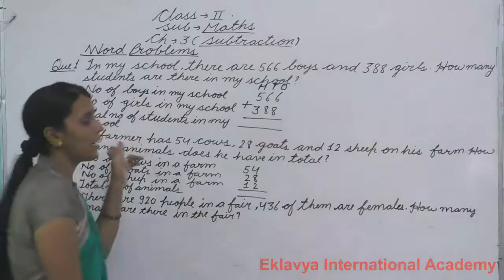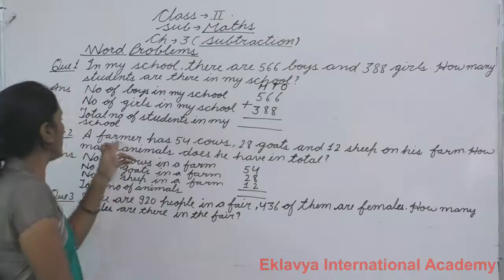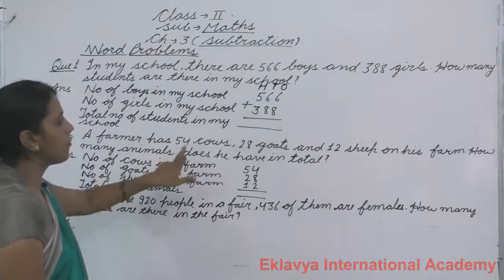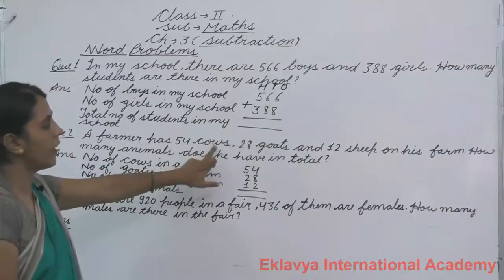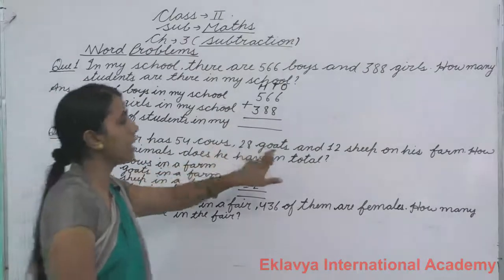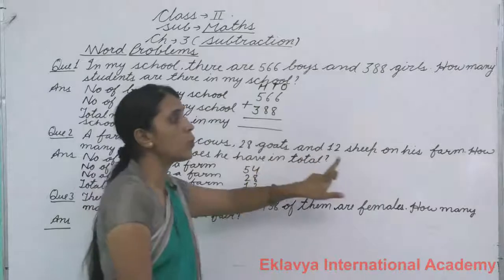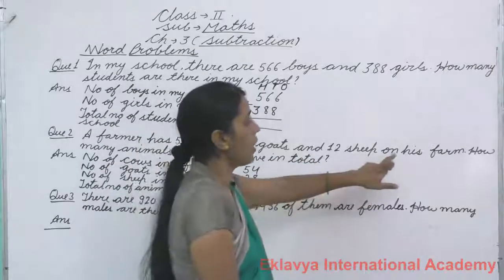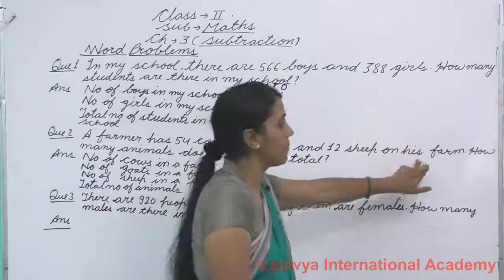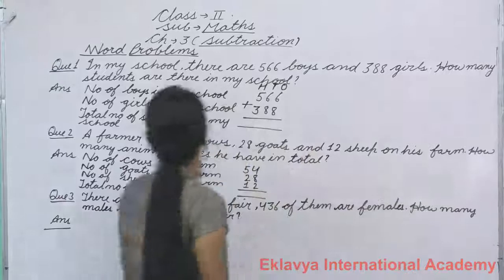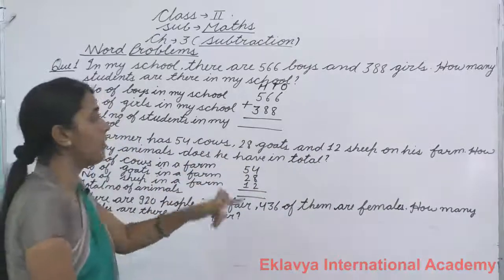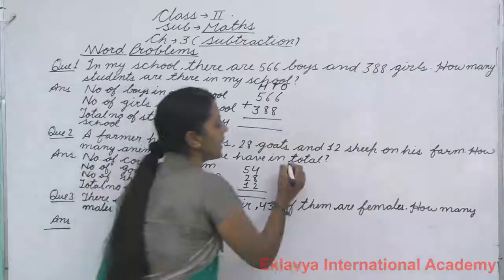We will read again. A farmer has 54 cows, 28 goats and 12 sheep on his farm. How many animals does he have in total?